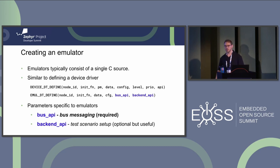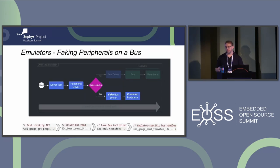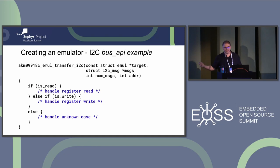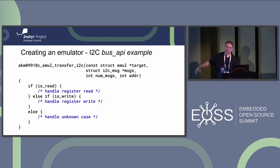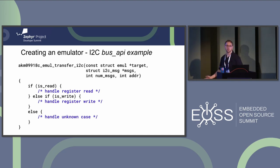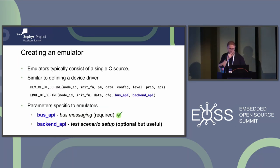When implementing the bus API, we're implementing that last blue box on the right in the diagram. This is only about 50 lines of code. For I2C, we implement a function that takes the emulator, the I2C messages, and a base register. We implement logic for: is it a read, is it a write, is it something else — essentially deciding how to respond to each message type.